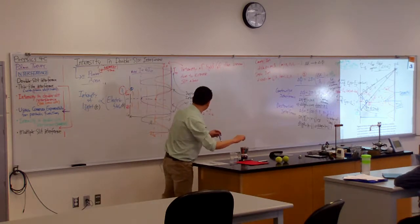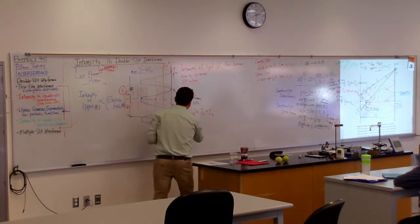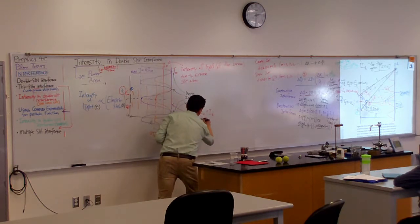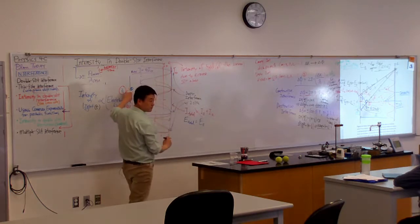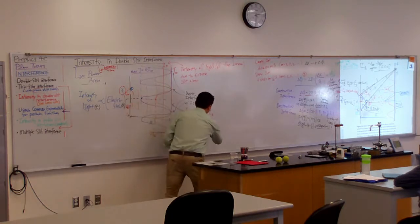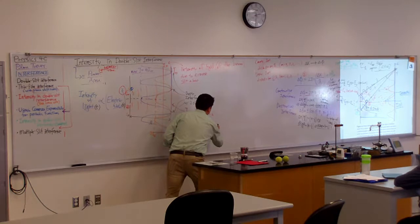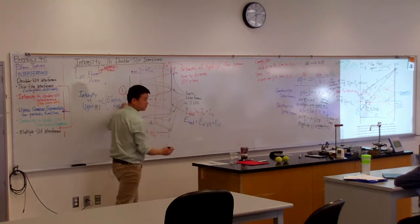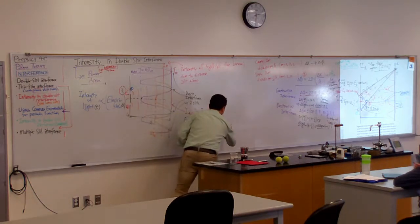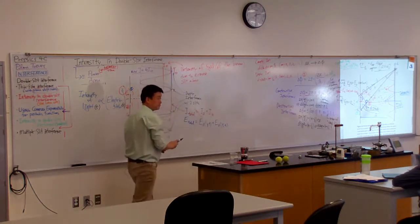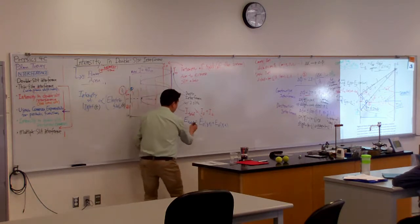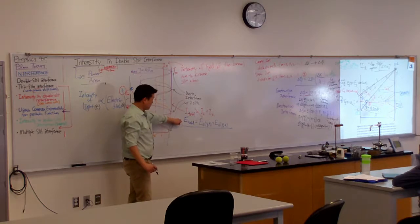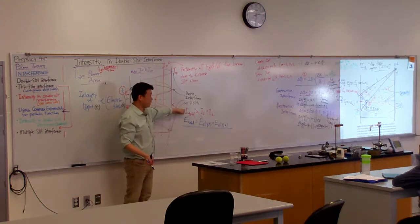Instead, what you can do is you can say the total electric field is equal to electric field due to slit number one, as a function of position and time, plus electric field due to slit number two, once again, as a function of position and time. So this is true, that's the superposition principle, and so what do you do when you want to get the total intensity?